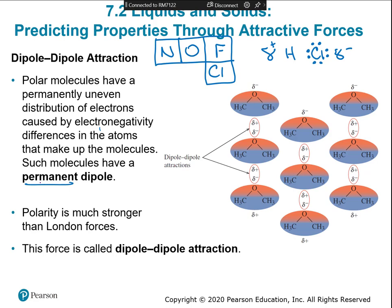The intermolecular force for polar molecules is called dipole-dipole attraction. A dipole means there's a slight positive and slight negative - a sidedness to the molecule. In dimethyl ether, the oxygen pulls electrons closer, making the CH3 groups slightly positive. These molecules line up so that the slightly negative oxygen is near the slightly positive CH3 groups, like a magnet.